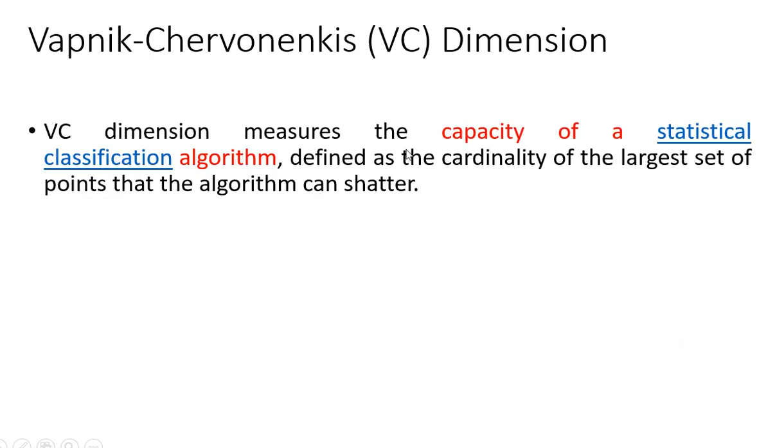On the other hand, VC dimension measures the capacity of a statistical classification algorithm. VC dimensions can be used to define the cardinality of the largest set of points that the algorithm can shatter. So basically this deals with the measurement of statistical classification algorithms.